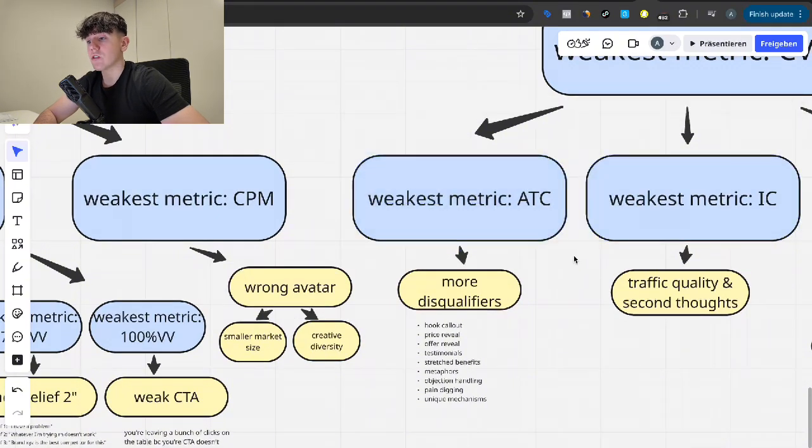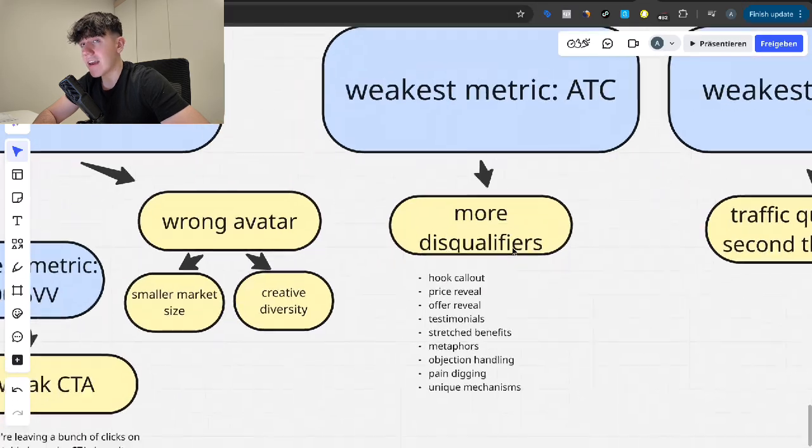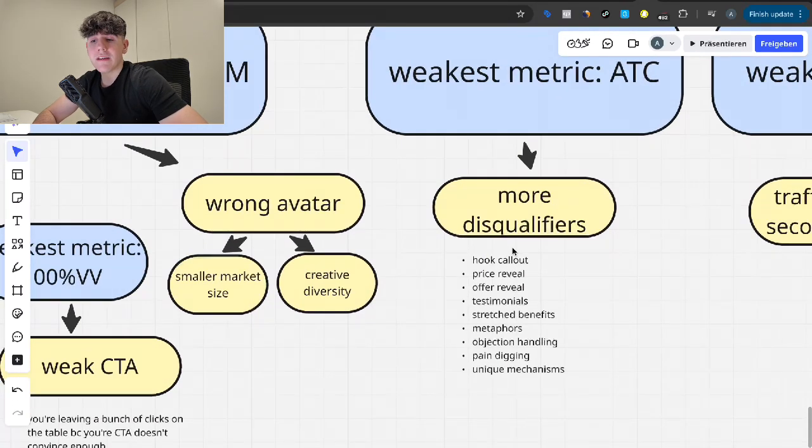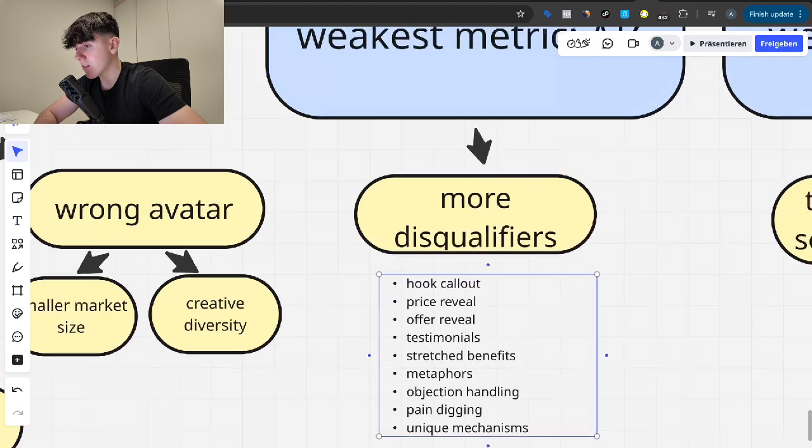If the weakest metric in your ad is the add to cart rate, that means you need more disqualifiers. A disqualifier is basically something that makes an ad longer and then basically leads to fixing quality problems, meaning it's going to get fewer people onto the funnel, but however, the ones that do click through are actually a lot more warmed up and they buy more, convert more, spend more, better quality customers. So these disqualifiers can be a hook call out at the beginning, a price reveal, an offer reveal, testimonials, stretch benefits, which are long-term benefits, metaphors, objection handling, pain digging, unique mechanism, and so on.